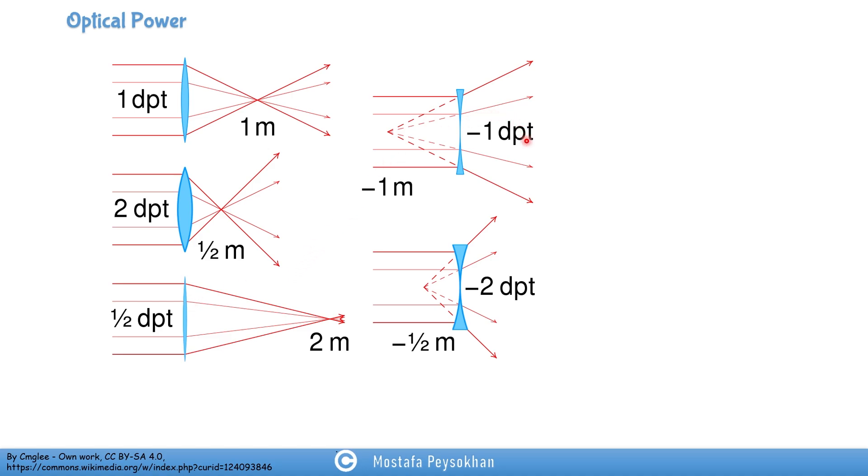This lens, the optical power is negative one. So the focus is on the left-hand side of the lens, and it's at one meter. So it's negative one, negative one diopter and the focal length is negative one.